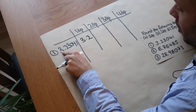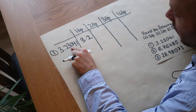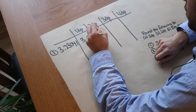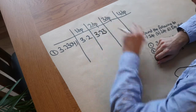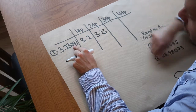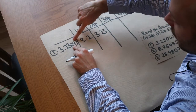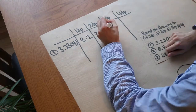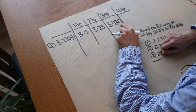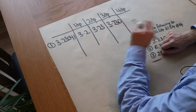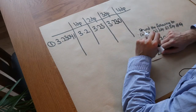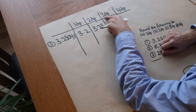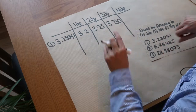To two decimal places for 3.23041: we keep up to the second digit after the decimal point and check the next. Is it greater or equal to five? No, so it stays as three. We've got 3.23. For three decimal places, we check up to the third digit, which is zero, then check the digit after — four. Is that greater or equal to five? No, so it's 3.230. You might think that zero at the end is unnecessary, but it would be wrong to write 3.23 because you'd be giving only two decimal places when we need three.